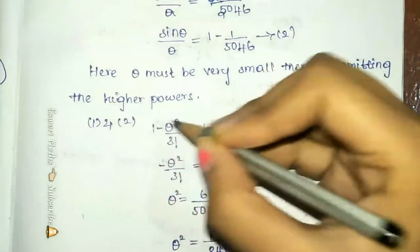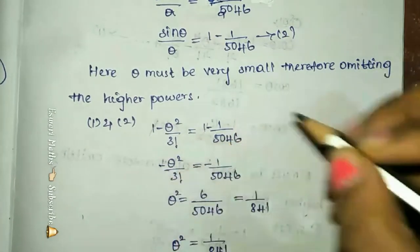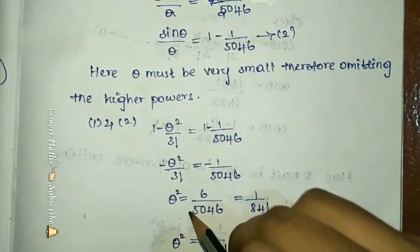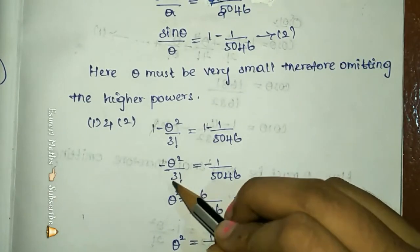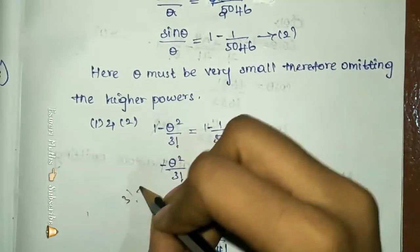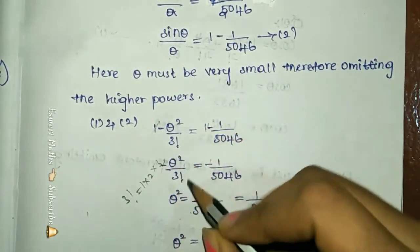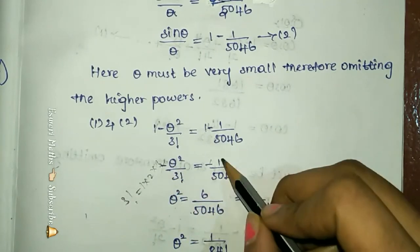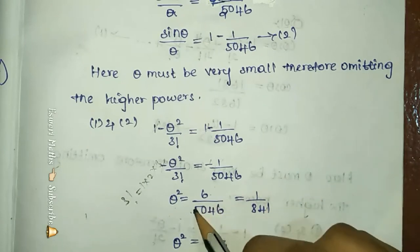This one will cancel, and the other one will cancel. If it's minus, it will cancel. So theta square equals — what is the factor? 1 into 2 into 3. Now 3 factorial equals 1 into 2 into 3, so 3 factorial equals 6. We can multiply 6 by 5046.